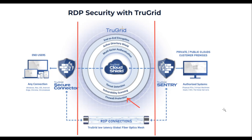To set up TrueGrid Secure RDP, customers install one or more instances of TrueGrid Sentry software on a suitable Windows server on the network. TrueGrid Sentry installations make reverse proxy connections to the customer's instance of Cloud Shield in Azure. Sentry instances process Active Directory authentication and RDP brokering.